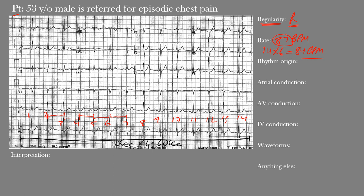Another method works well for regular rhythms: find a complex that falls on a thick line and count the thick lines to the next R wave. Here there are just over 3 thick lines. Do 300 divided by 3 equals 100, and 300 divided by 4 equals 75. Since it's between 3 and 4 thick lines, the rate falls between 75 and 100 — consistent with the actual 87 beats per minute.